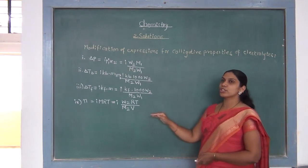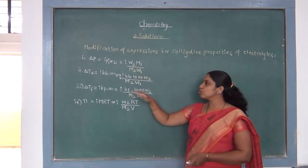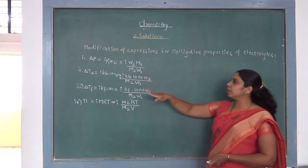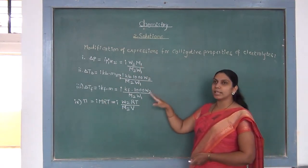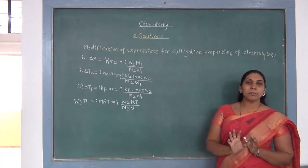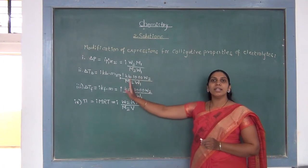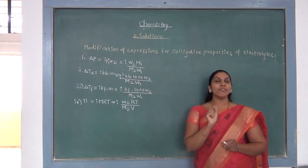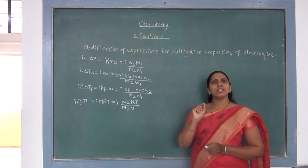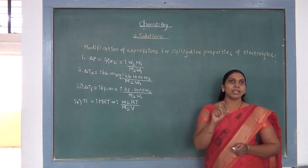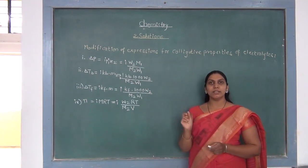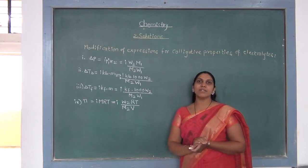In all these equations, all the terms used — delta P, delta Tb, delta Tf, pi, Kf, Kb, x2, W2, M1, M2, W1, etc. — have the usual meanings that we have studied in the case of colligative properties of non-electrolytes.